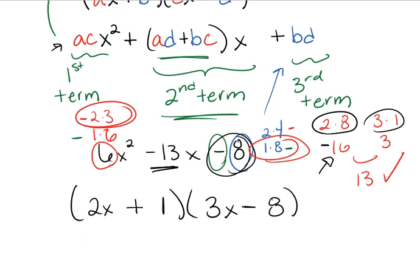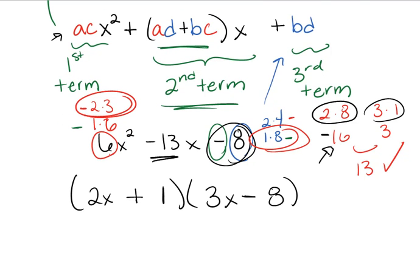As always, let's double check. When we multiply through, we should get 6x minus 16x plus 3x minus 8.